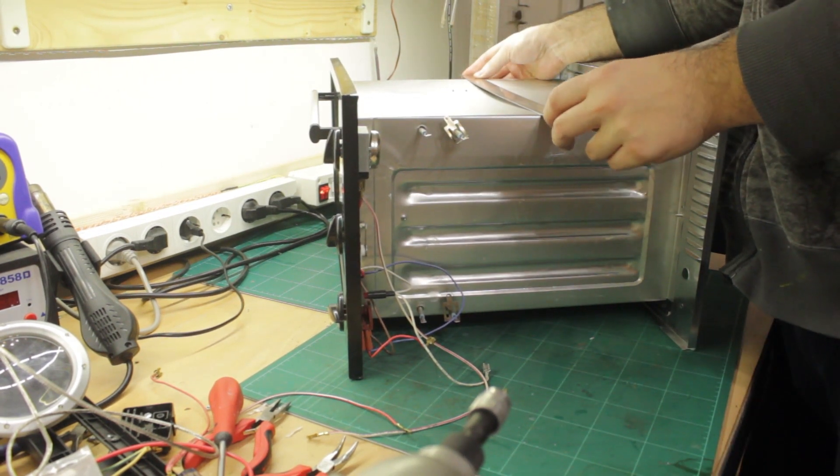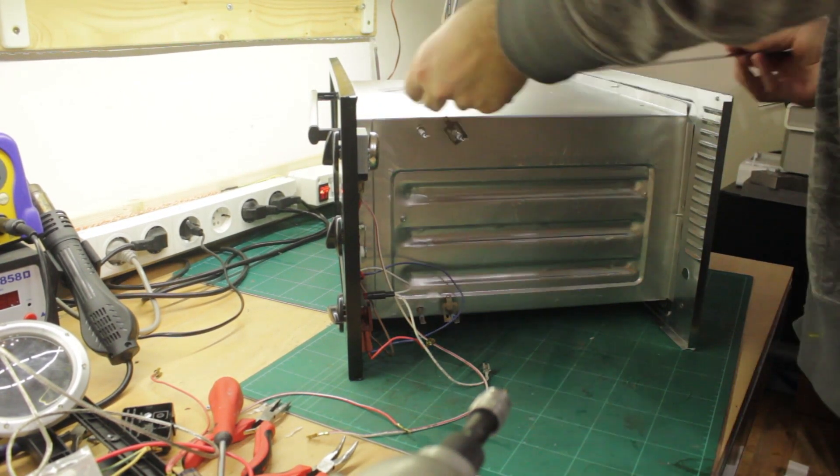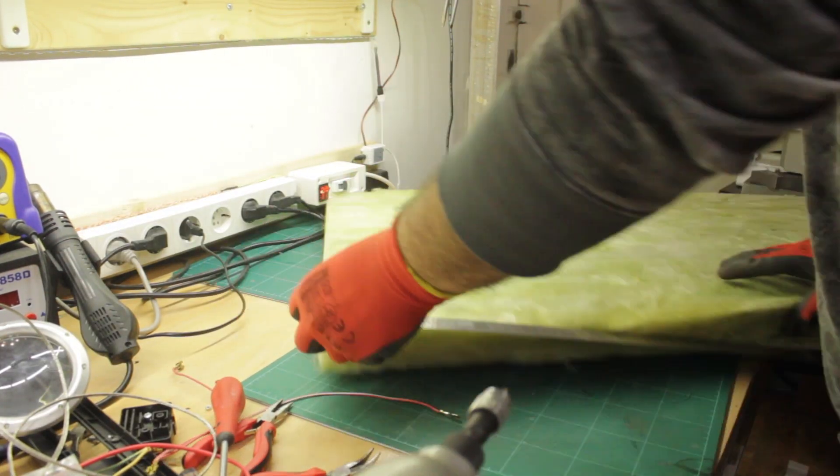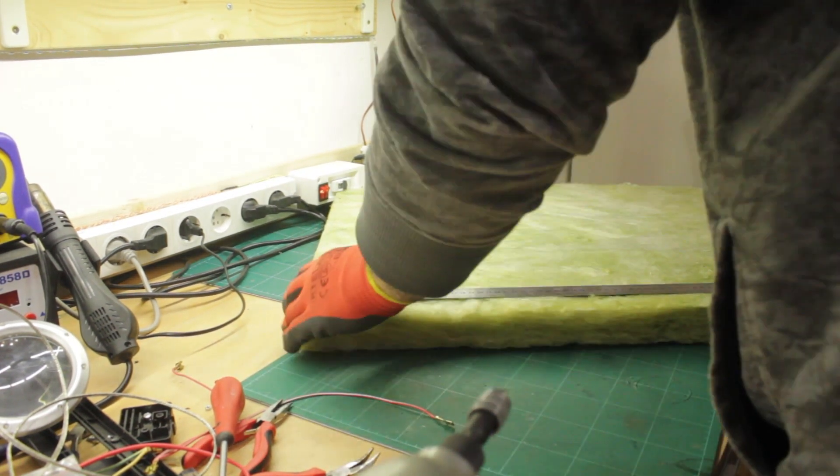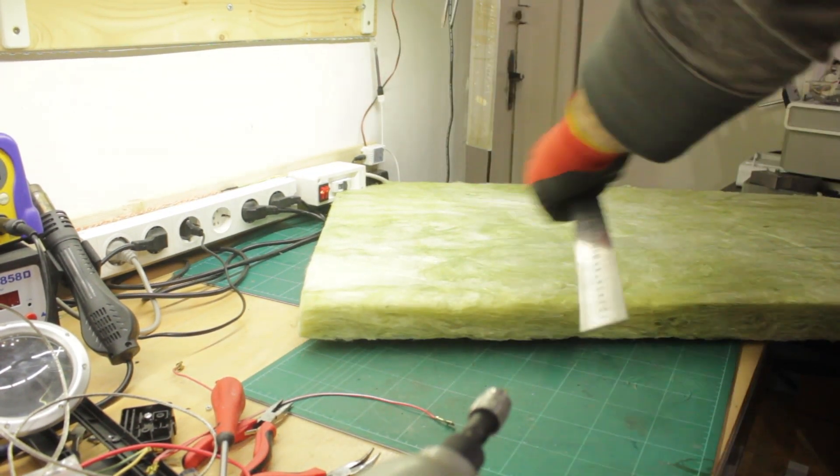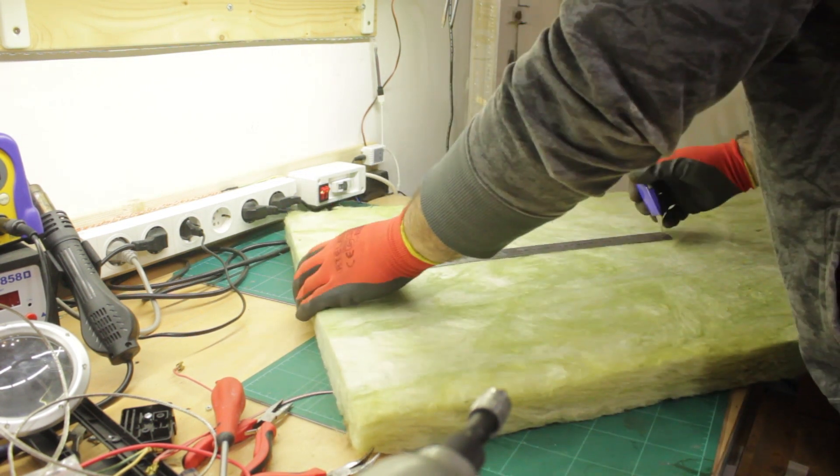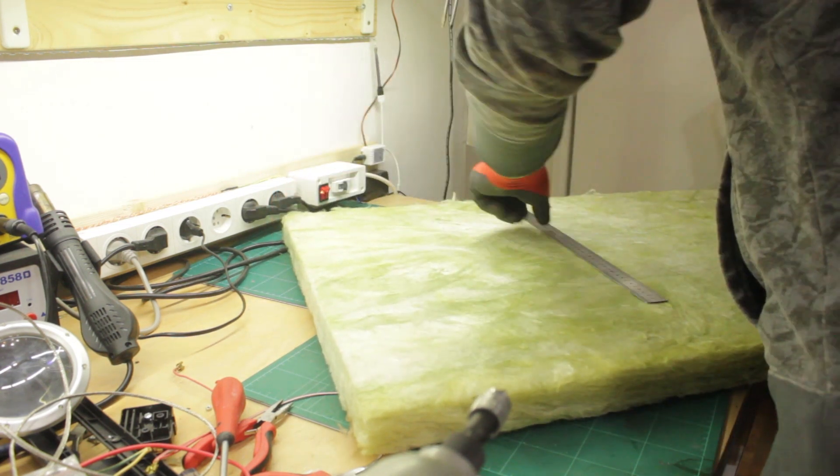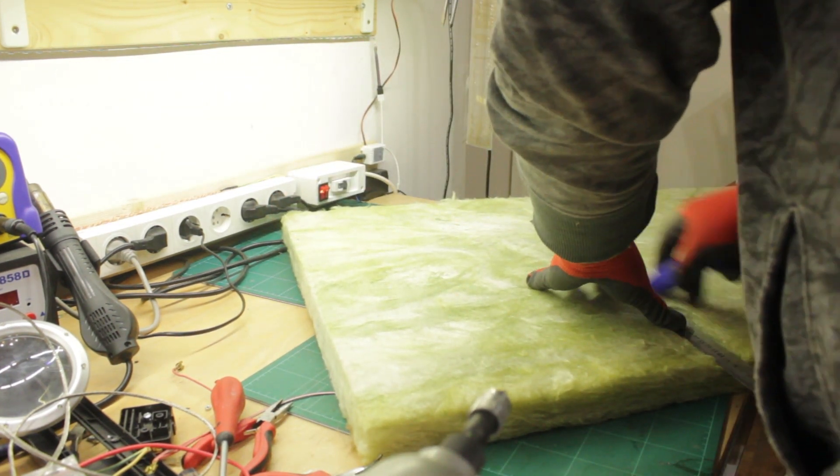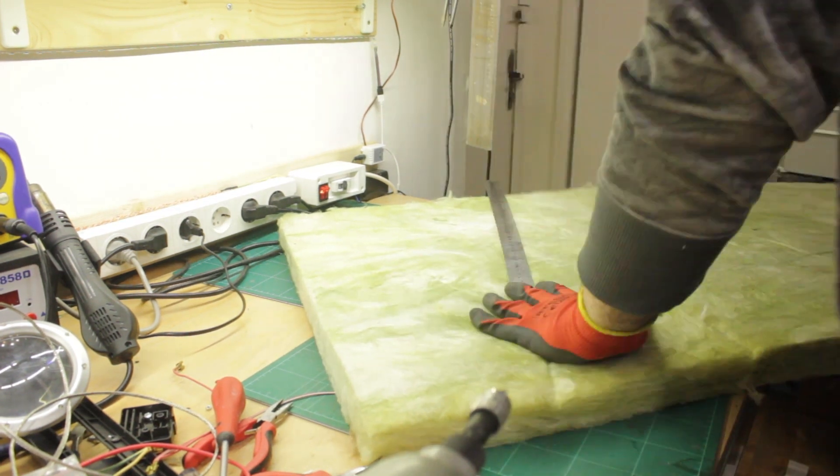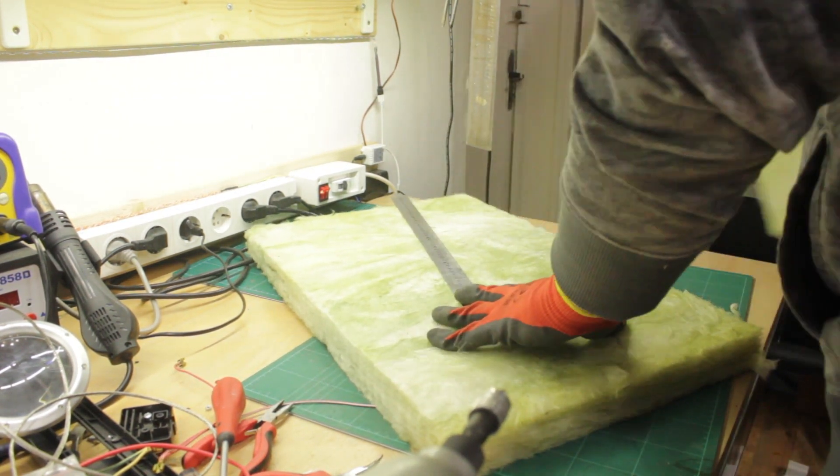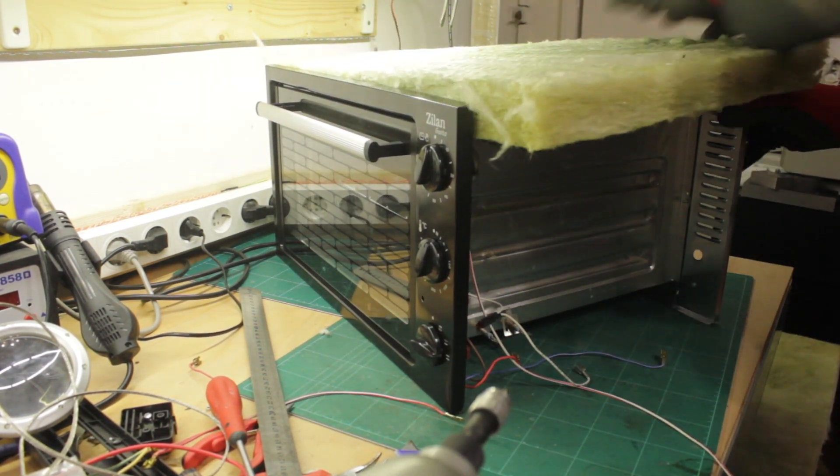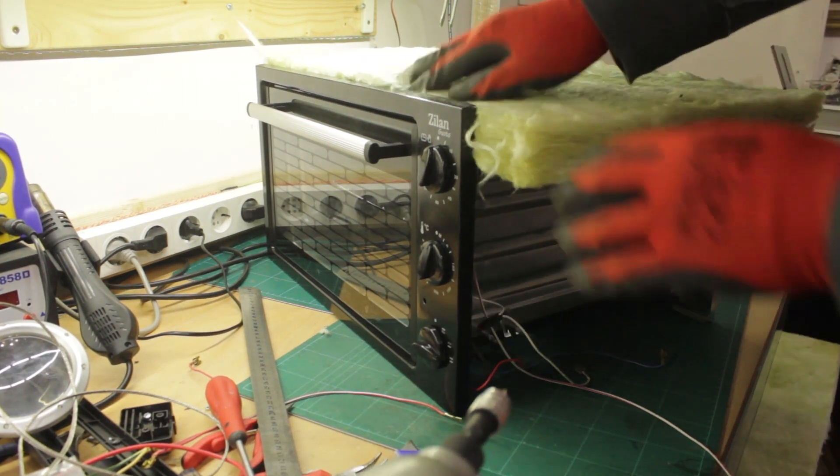I then measured the oven to cut pieces of heat insulation to size. I'm using mineral wool, aka rock wool, to further insulate the oven since I want it to be efficient.